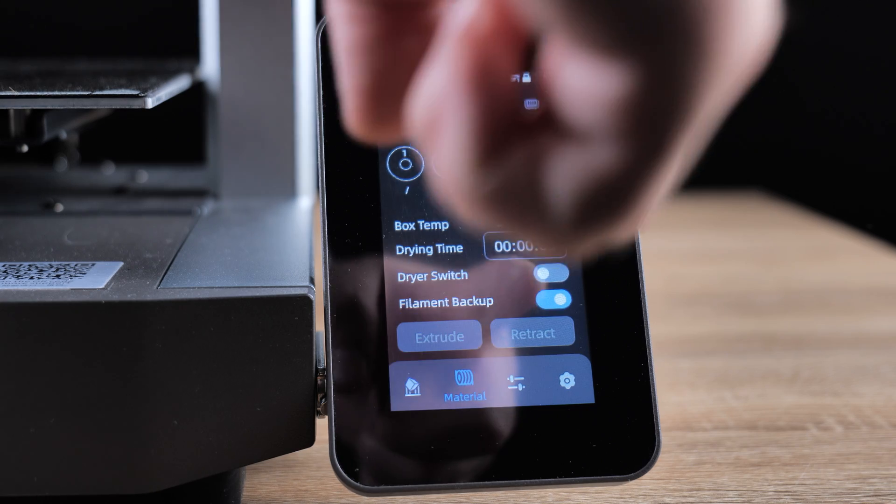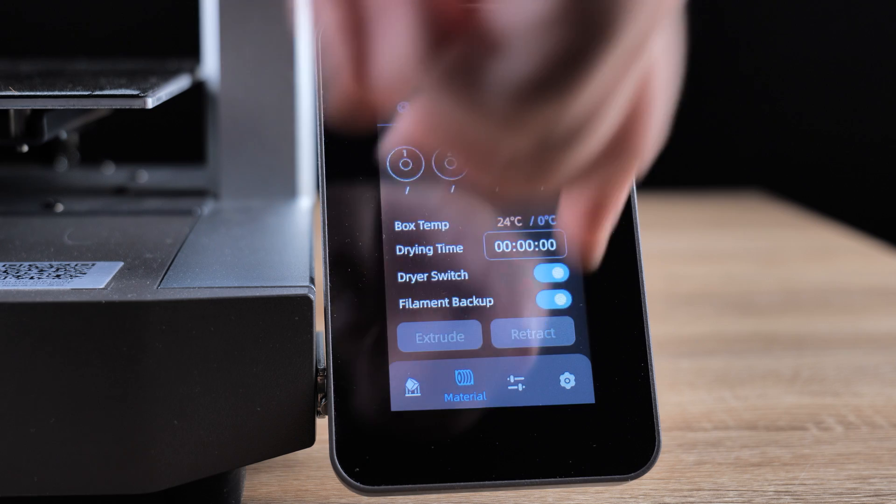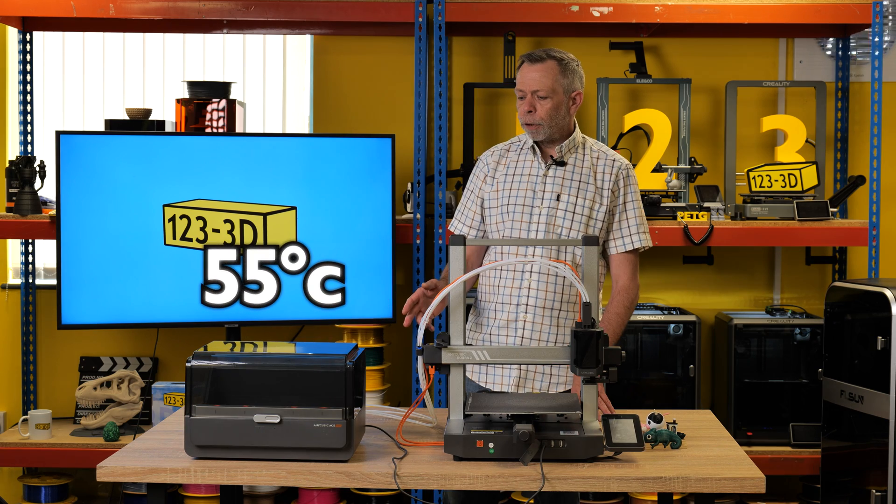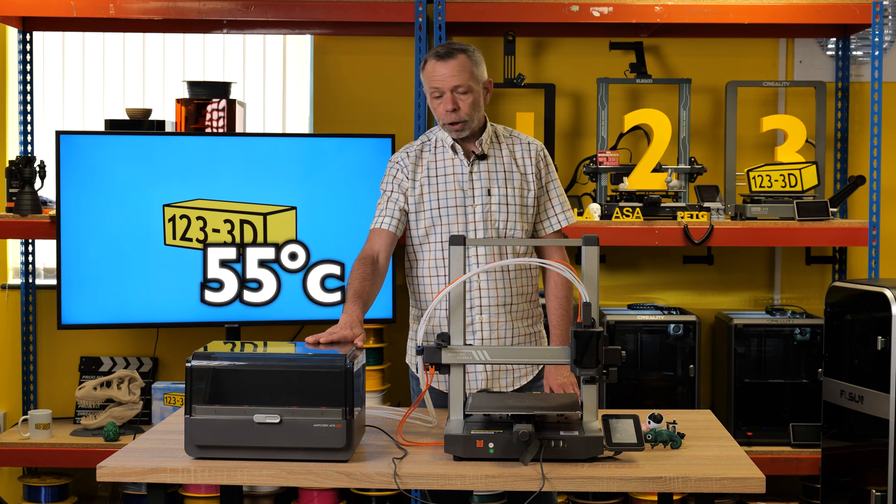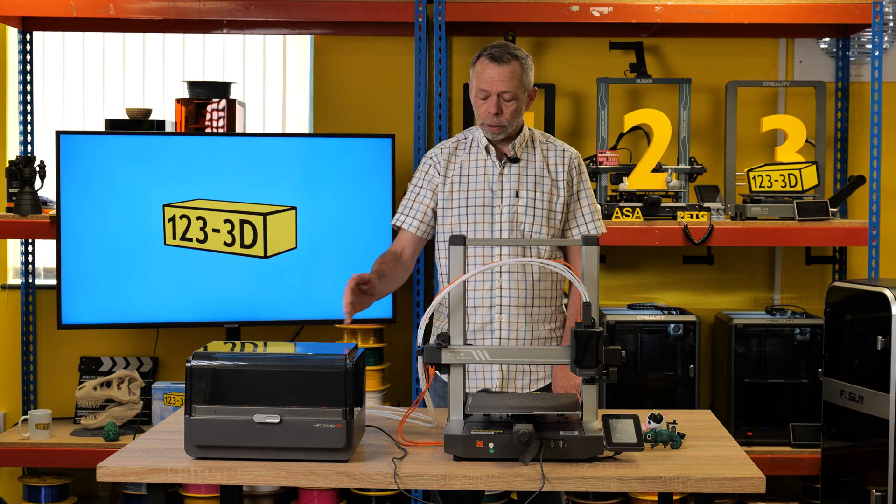The Ace unit has a built-in filament dryer. Now, you can control this via the actual user interface on the printer. Maximum temperature for drying your filament is 55 degrees C. If you've got damp filament, the Ace unit is quite capable of drying the filament prior to printing and while printing.